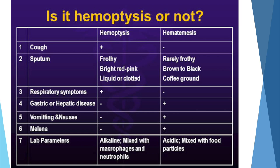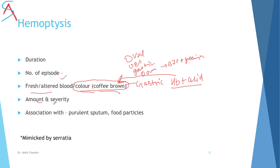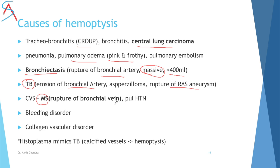The next symptom is hemoptysis. Ask about duration, number of episodes, whether it is fresh blood or coffee-brown colored (hemoglobin mixed with gastric acid turns coffee-brown), and amount or severity to assess blood loss and plan transfusion or fluid resuscitation. Ask about association with purulent sputum or food particles. Causes include TB, central lung carcinoma, pink and frothy hemoptysis in pulmonary edema, and massive hemoptysis (>400 ml) in bronchiectasis due to bleeding from the bronchial artery. In mitral stenosis, rupture of bronchial veins causes milder bleeding.